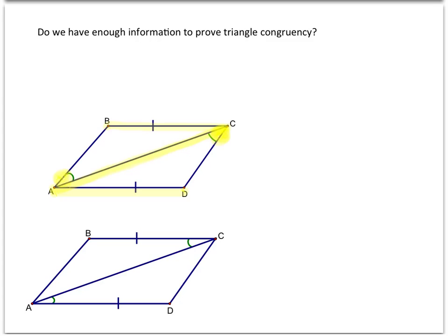But in the second situation, we've got congruent sides — again, same congruent sides — but the angles here are in between the congruent sides. So we do have enough information. In this second one, we can use side-angle-side to prove this.